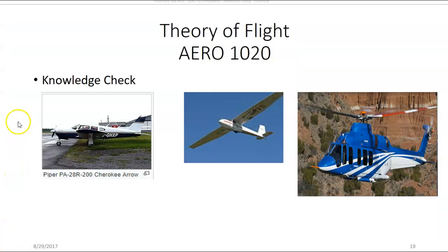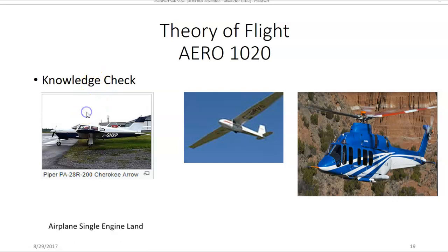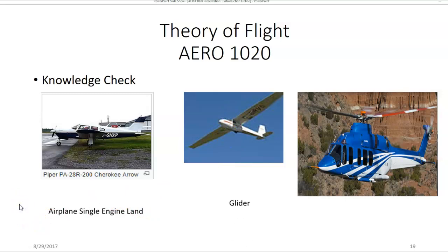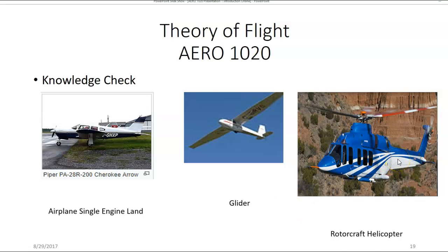Let's do a little knowledge check. The aircraft on the left — what is the category and class as it applies to airman certification? That would be an airplane, single engine land. The aircraft in the center is a glider, and remember gliders don't have separate classes, so that's glider category as it applies to airman certification. On the right we have a rotorcraft category, helicopter class. Again, these all apply to airman certification.